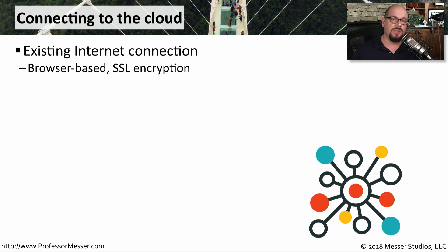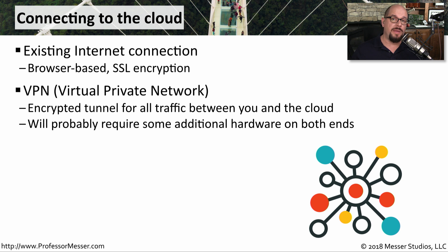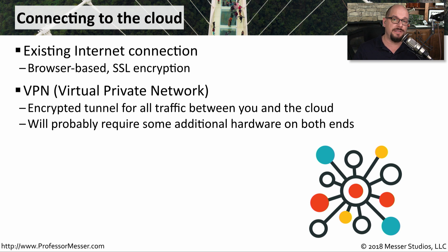If we're using an application that's located somewhere physically different than where we happen to be, there's probably a significant security concern about that communication. If you're using a browser-based application, it's common to use SSL or TLS encryption to have an encrypted tunnel between your device and the application. If you have an entire site of people that need secure access into this cloud-based application, you may want to enable VPN connectivity, where you create an entire tunnel for everyone to use to communicate back and forth to the cloud-based system.